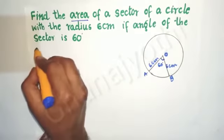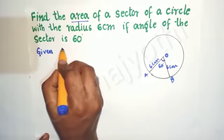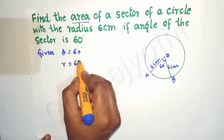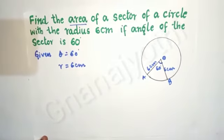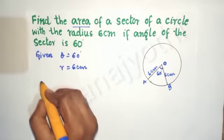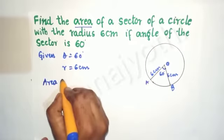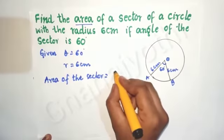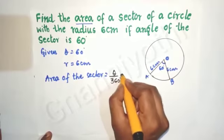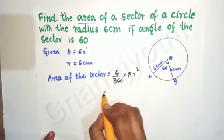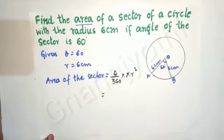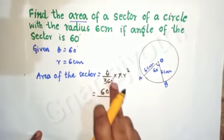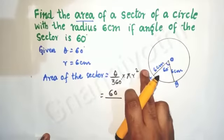We need to find the area of this sector. Given: theta = 60 degrees and radius r = 6 centimeters. The formula for the area of a sector is: area of sector = (theta / 360°) × πr². Here I will take the value of π as 22/7.